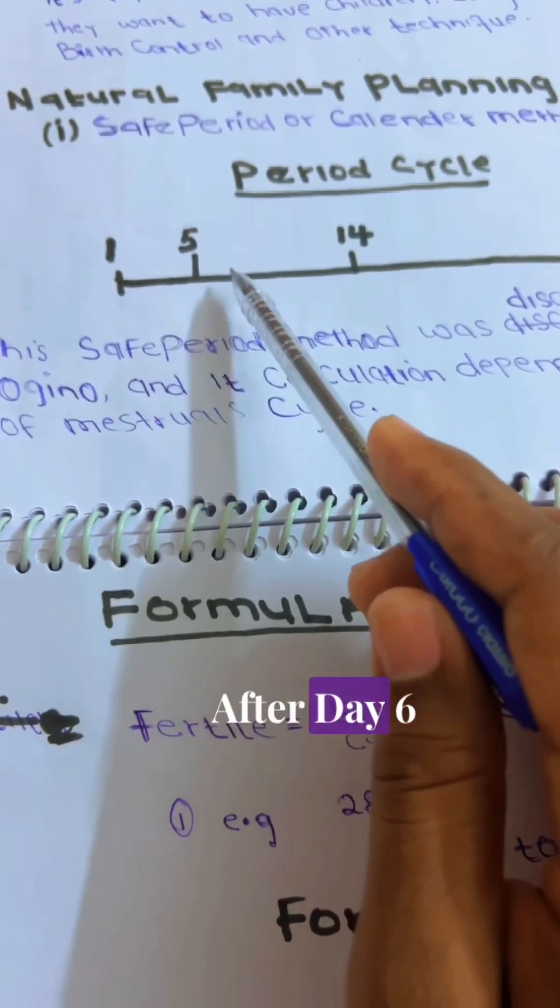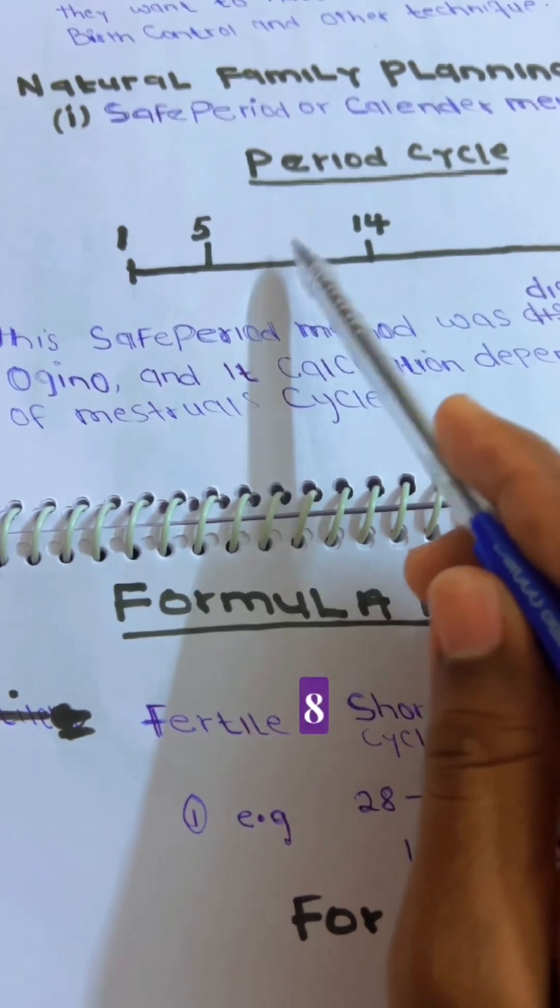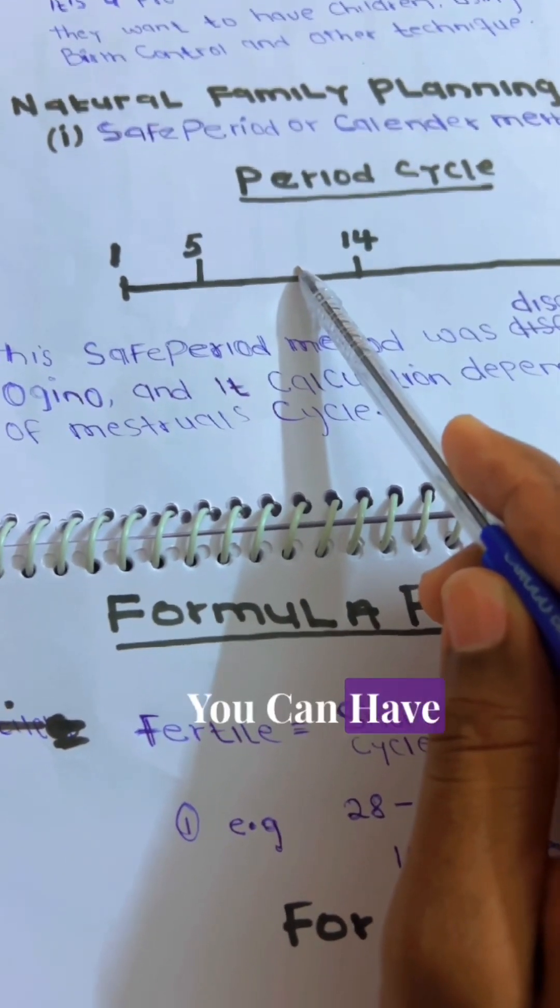So, after the 6, 7, 8, 9, you can have, which is safe.